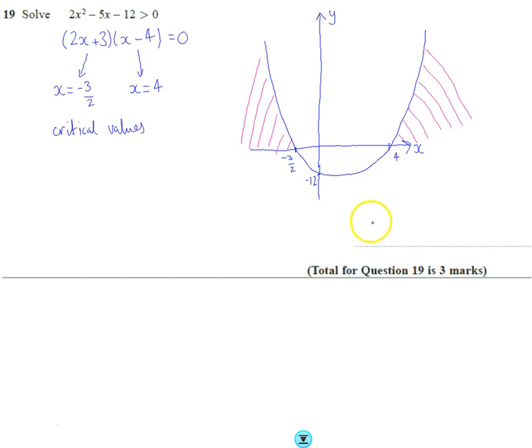So I know that therefore it's two separate inequalities: when x is greater than four, the graph is above the axis, and when x is less than minus three over two, it's also above the axis. And that's it, I'm finished.